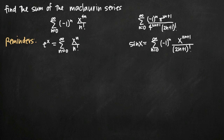Today we're going to be talking about how to find the sum of a Maclaurin series by relating it to a very common Maclaurin series with a known sum. In this particular video, we're going to be doing two different problems. The first one is the sum from n equals zero to infinity of the quantity negative one raised to the n times x to the four n divided by n factorial.